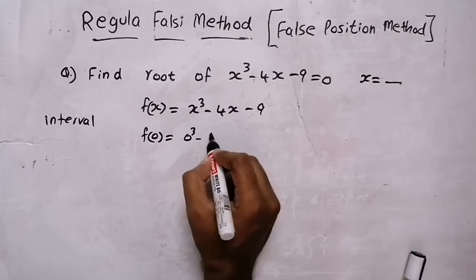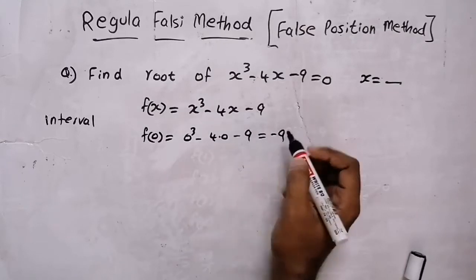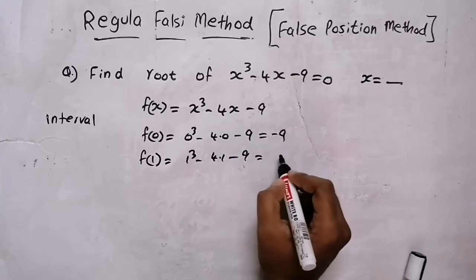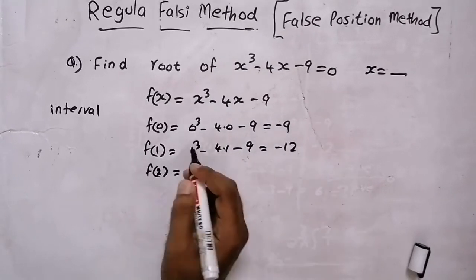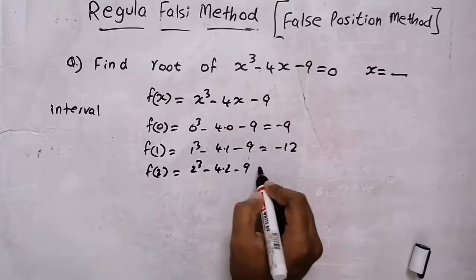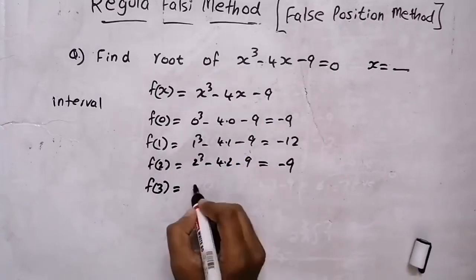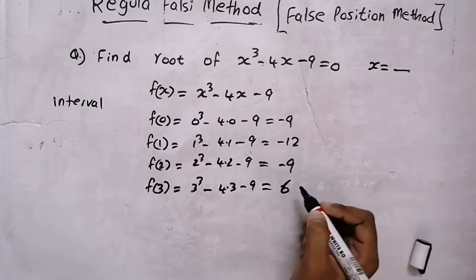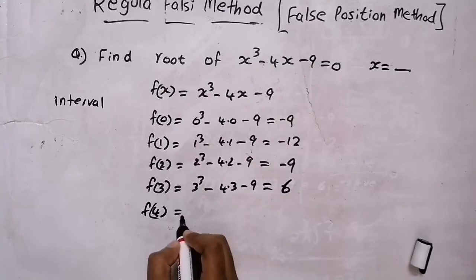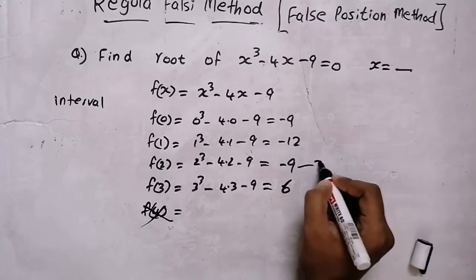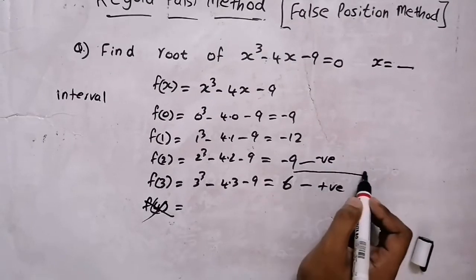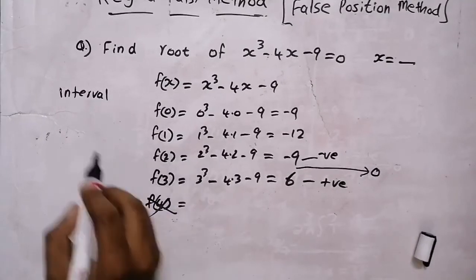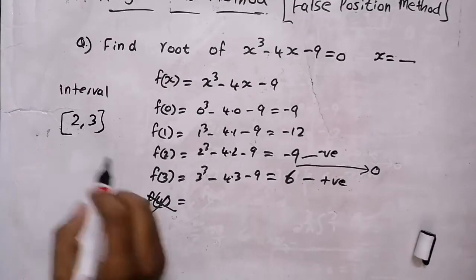When we substitute f(0), we get 0³ − 4(0) − 9, which equals −9. Then f(1) gives −12, and f(2) gives −9. Then f(3) gives 3³ − 4(3) − 9, which equals 6. We do not need to find f(4) because we already have a consecutive negative and positive value, meaning the root lies in between. Thus we found the interval as [2, 3].